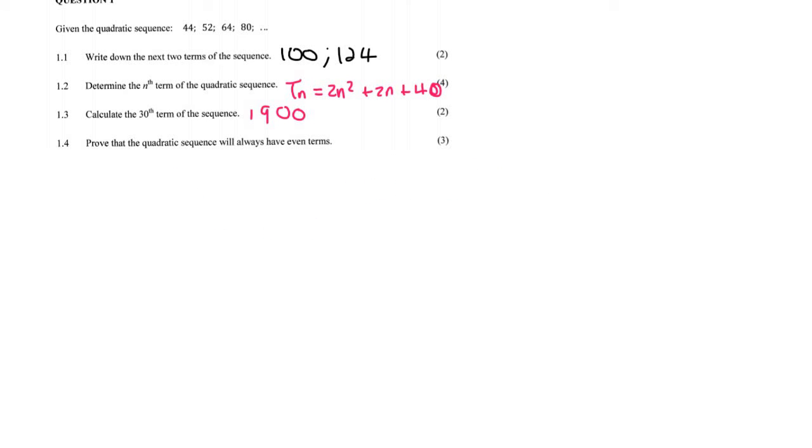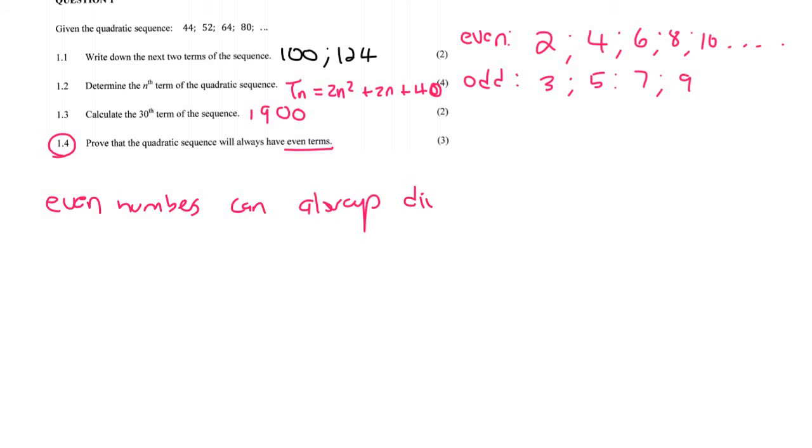Number 1.4, quite a weird question. It says prove that the quadratic sequence will always have even terms. Let me show you what even actually means. We know that even numbers are numbers like 2, 4, 6, 8, 10, on and on. These are even, and then odd numbers, they're the other ones. They're like 3, 5, 7, 9. Something that's important is that even numbers can always divide by 2.